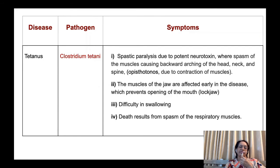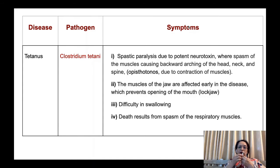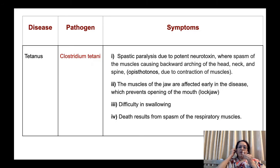The next bacterial disease of the central nervous system is Clostridium tetani. This is again an obligate anaerobic microorganism that may appear gram-positive or gram-negative. It is an endospore-producing microorganism that causes the disease tetanus. Symptoms are spastic paralysis due to a potent neurotoxin. There are spasms of muscles causing backward arcing of the head, called opisthotonos. The muscles of the jaw are affected early, preventing opening of the mouth — this is called lockjaw. Difficulty in swallowing and death may result from spasm of the respiratory muscles.